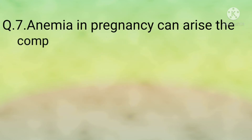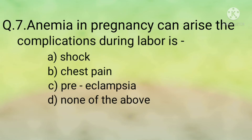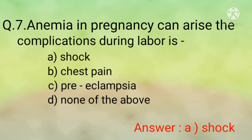Question number seven: Anemia in pregnancy can cause which complication during labor? Options are: option A, shock; option B, such pain; option C, preeclampsia; option D, none of the above. The correct option is option A, shock. Because of anemia, even a minor traumatic delivery without bleeding may produce shock or hypoxia, as the woman has already suffered from anemia during pregnancy.